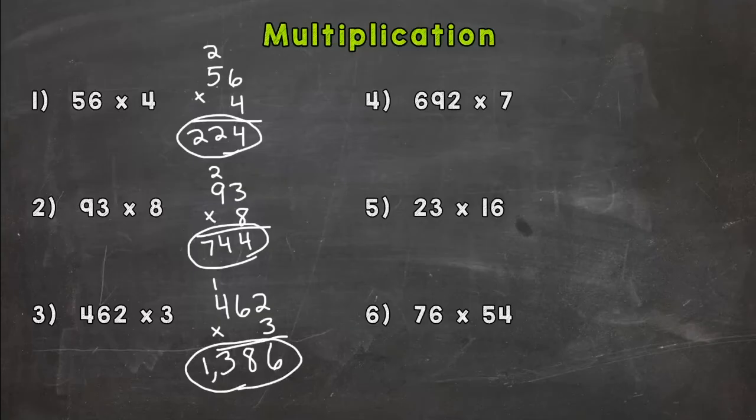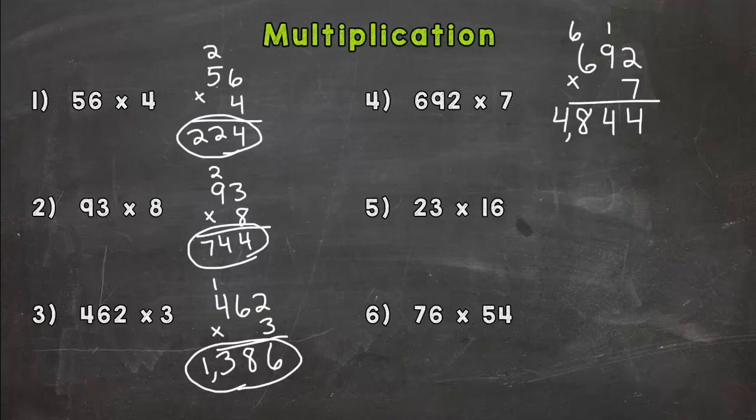Number 4, here we have 642 times 7, so we need to take the 7 to the 2, the 9, and the 6. Let's start with 7 times 2, which is 14. 7 times 9 is 63, plus that 1 is 64. Now we have 7 times 6, which is 42, plus that 6 is 48. So 4844.